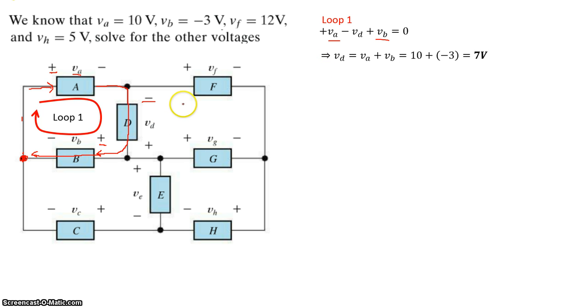Similarly, now let's take a look at the second loop consisting of elements D, F, and G. In this loop two, let's start from this node right here.